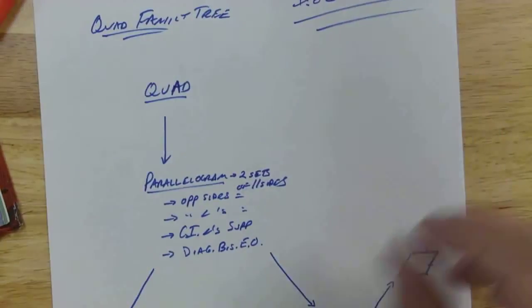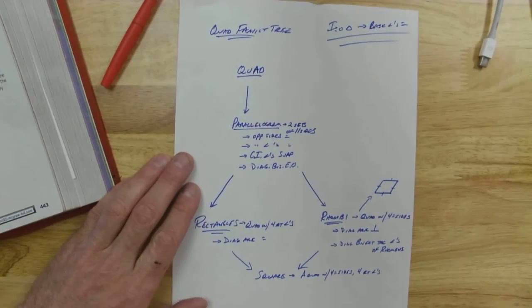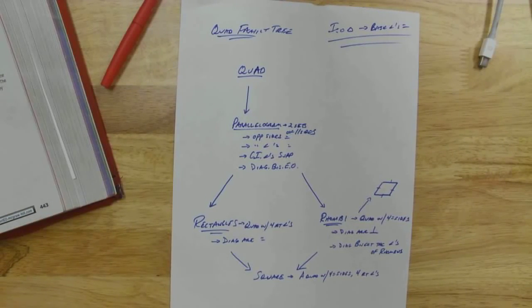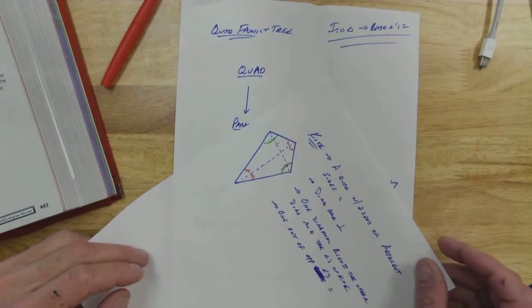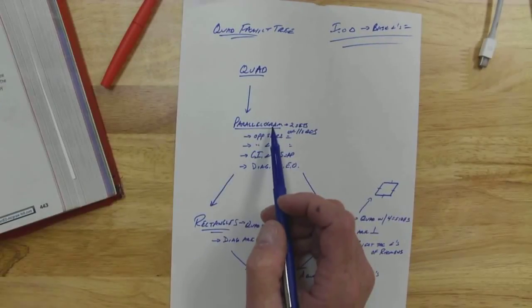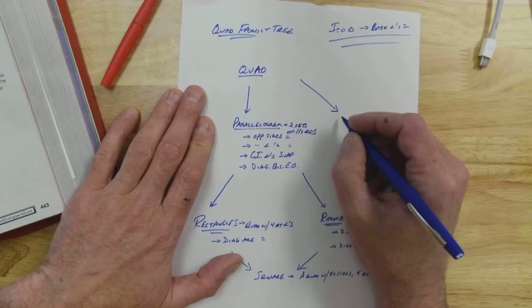So that's kite. If we were going to go over to this family tree we had the other day, where would kite belong? Under quadrilateral. Is this a parallelogram? It's not a parallelogram, so it would not go underneath this.